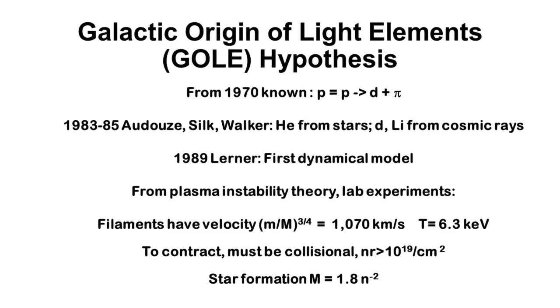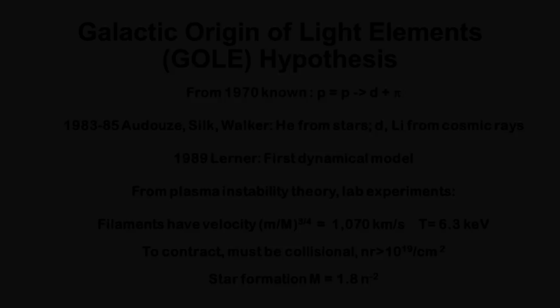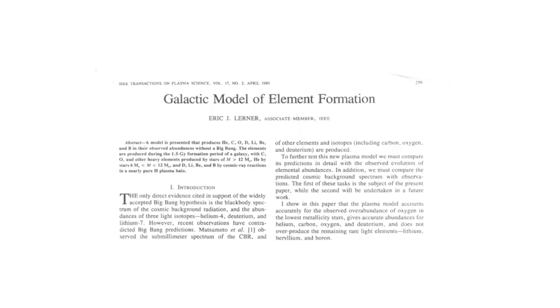Starting in 1989, I got involved in this development of new theories about the light elements. Mine, published in 1989, was the first dynamical model of the formation of galaxies. What I was asking was: can we, starting from plasma theory — the theory of how currents move through ionized gases, plasmas, where electrons are stripped off and free to move — from that theory and from laboratory experiments with plasmas, establish how a galaxy would form and how stars within that galaxy would develop and therefore produce light elements?